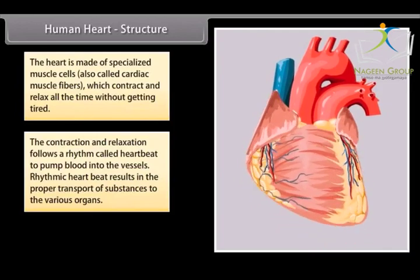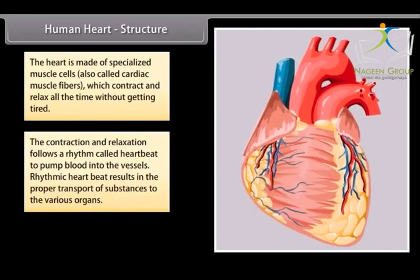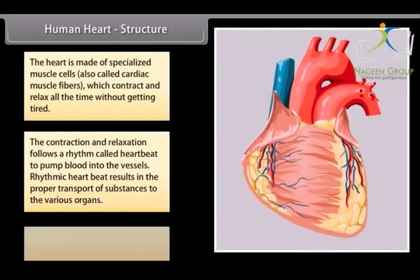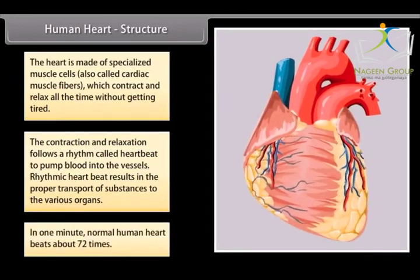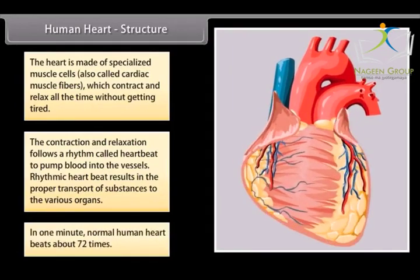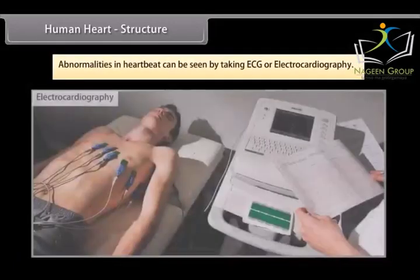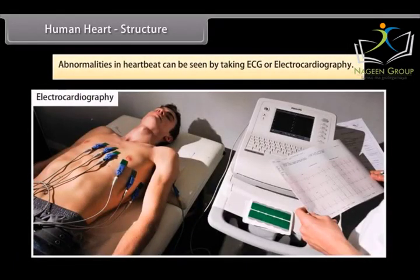The contraction and relaxation follows a rhythm called heart beat to pump blood into the vessels. Rhythmic heartbeat results in the proper transport of substances to the various organs. In one minute, normal human heart beats about 72 times. Abnormalities in heart beat can be seen by taking ECG or electrocardiography.